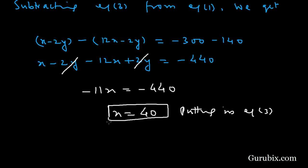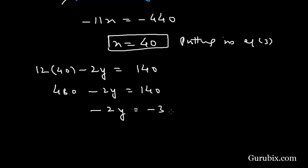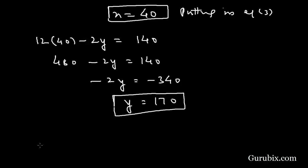We substitute x = 40 into equation number 3: 12(40) − 2y = 140, which gives 480 − 2y = 140. Therefore −2y = 140 − 480 = −340, so y = 170.